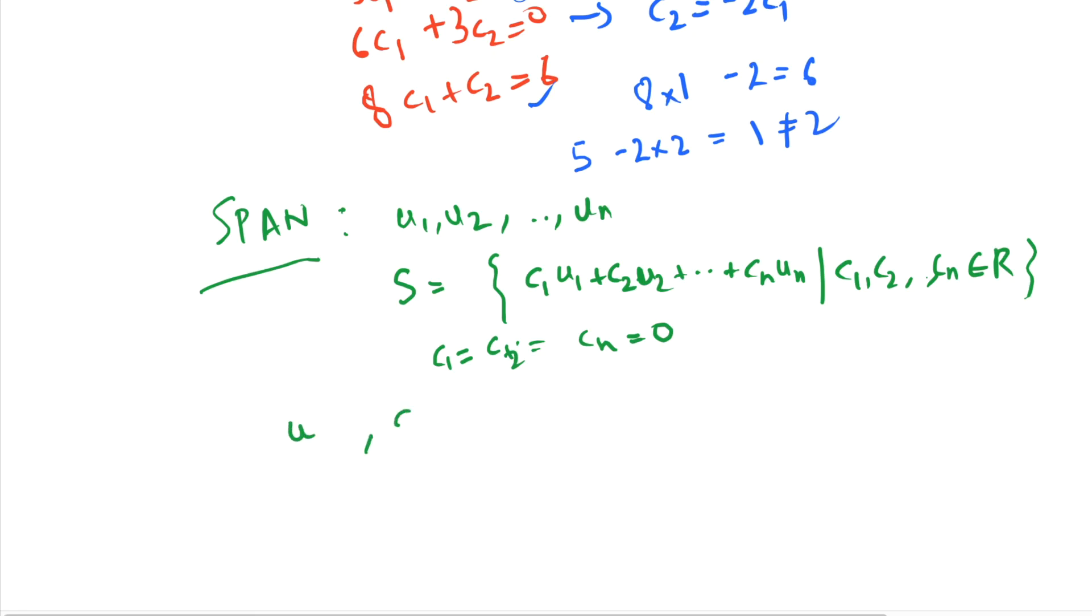will be the set {au} such that a belongs to the set of real numbers. And this set basically contains all the scalar multiples of u. So if u is [1, 2, 3], then the